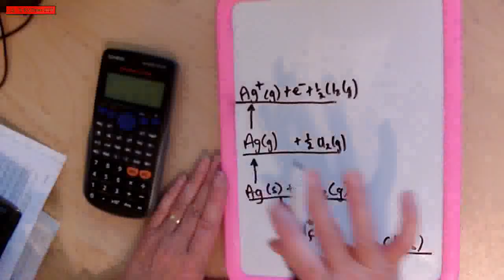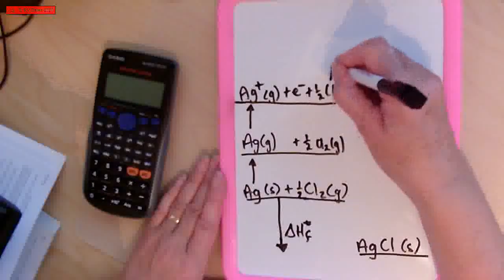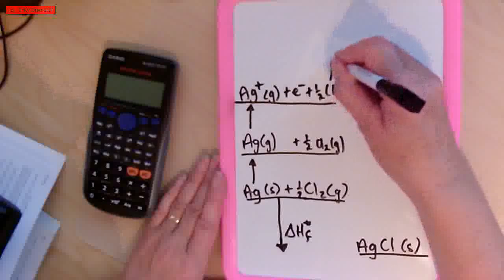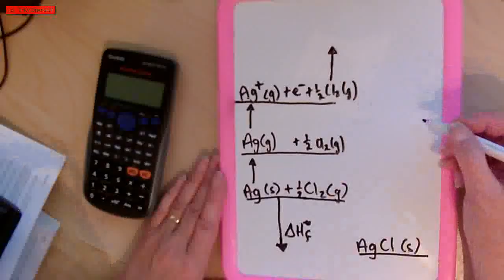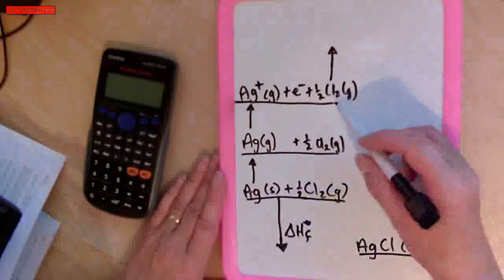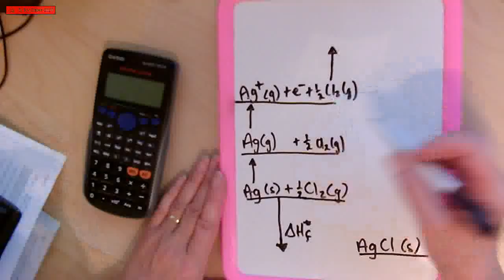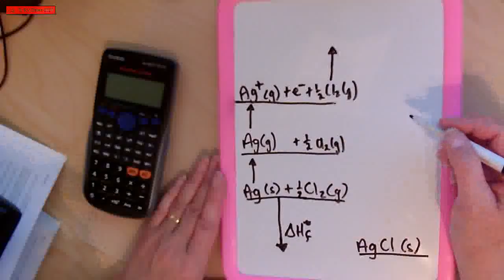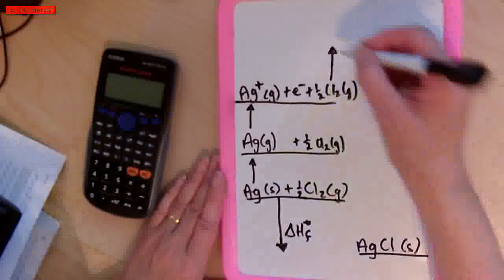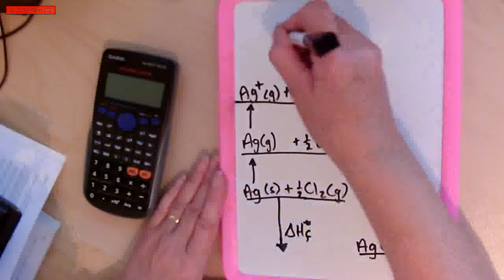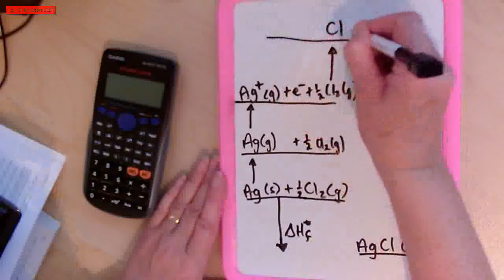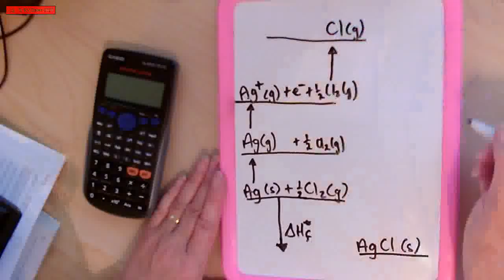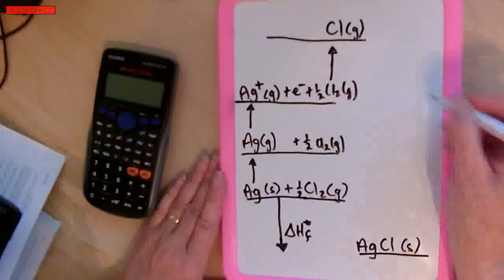Now silver is completely done with, so I'm going to look at chlorine and make some changes to it. Chlorine is in its gaseous form as a molecule, and I need to split the bonds between those molecules — I need to atomise the chlorine. So chlorine gas goes to chlorine atoms.